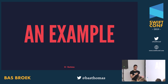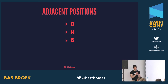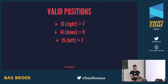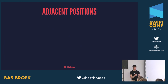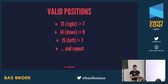Here's an example similar to what we saw in the beginning. If we take this puzzle, we have our empty tile between 13 and 15. What we check is what are our adjacent positions — that's 13, 14, and 15. With these valid positions: if we move 13 to the right, we have 7 valid positions; if we move 14 down, we have 9; if we move 15 left, we have 7. So what we want to do is move 14 down — that's the next best step. We do that, and repeat. We again ask what are the adjacent positions, what are the valid counts after doing that, and repeat. And that's how you solve the puzzle.